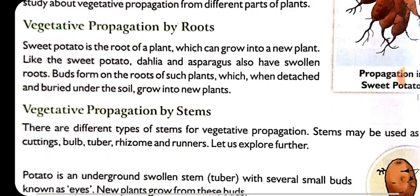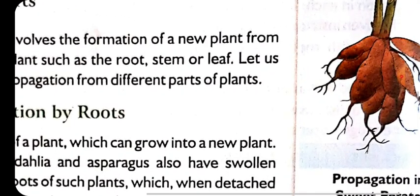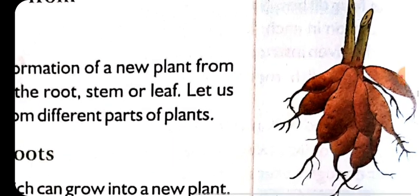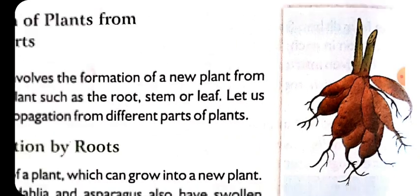First is vegetative propagation by the roots. Which plants grow from roots? For example, sweet potato — sweet potato is a kind of root of a plant which can grow further into a new plant. If we put sweet potato in the soil, it grows into a new plant.